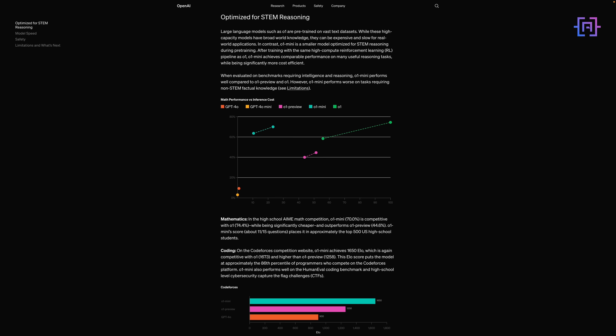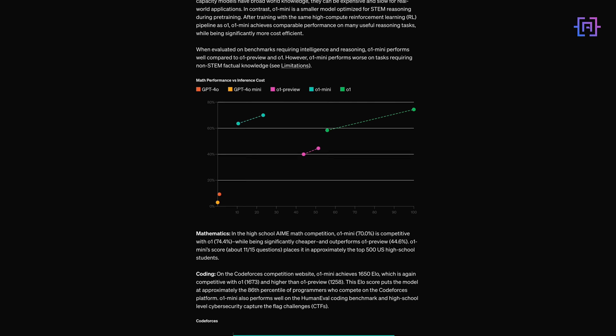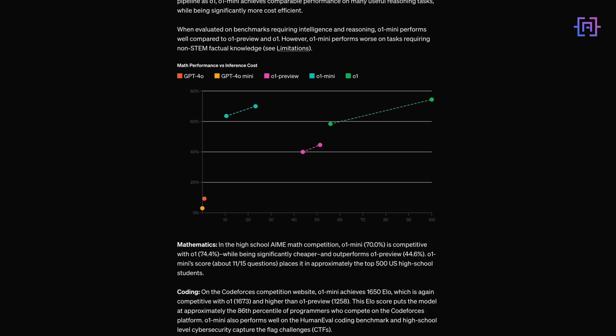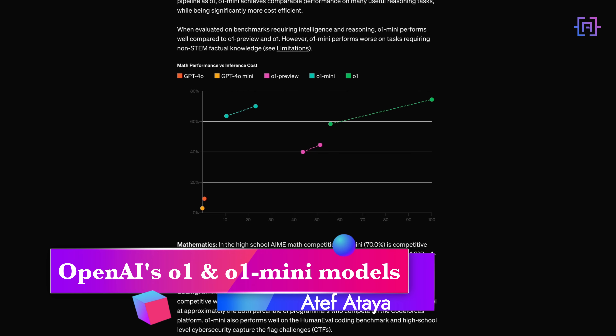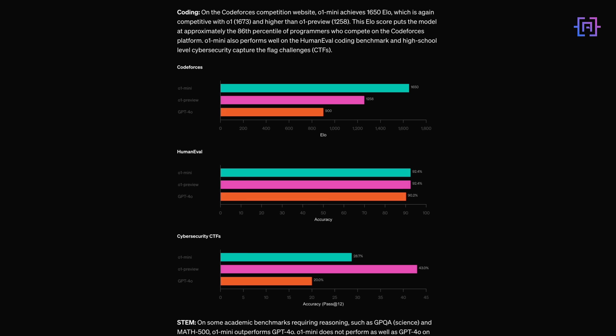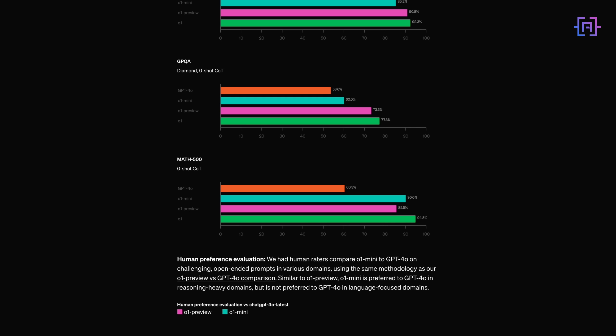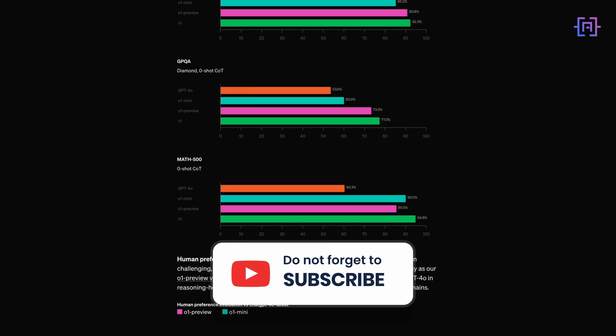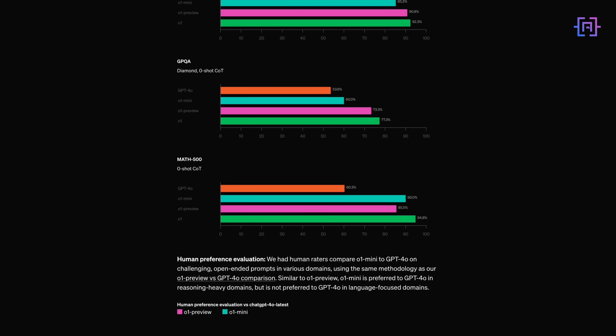Here's how these models stack up in real-world applications. o1 mini scored 70% on the math competition, close to o1's 74.4%, while being significantly cheaper. On code forces, o1 mini achieves 1550 Elo, just below o1's 1673, but higher than o1 preview. For reasoning tasks, o1 mini excels at STEM-related reasoning while being faster and more cost-effective for applications that don't require broad world knowledge.